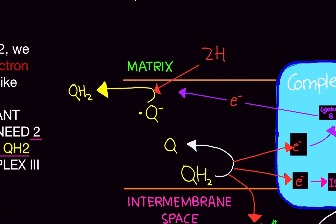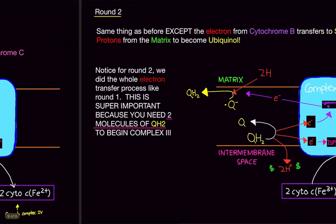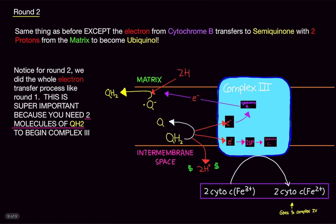This is why it's called the Q cycle, because this is going to go back now to round one to help out. This is going to go back to round one here. That's why it's called the Q cycle.